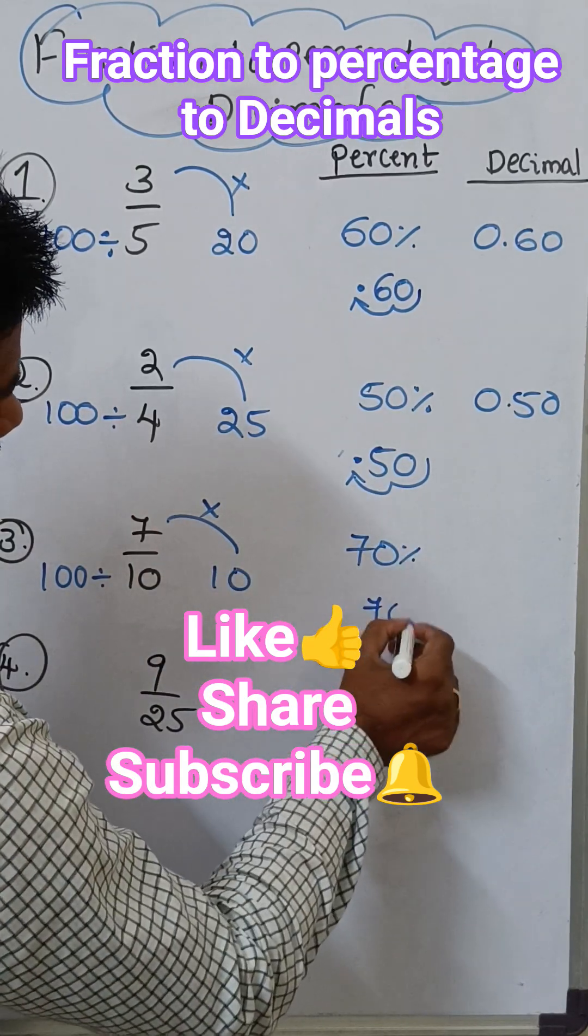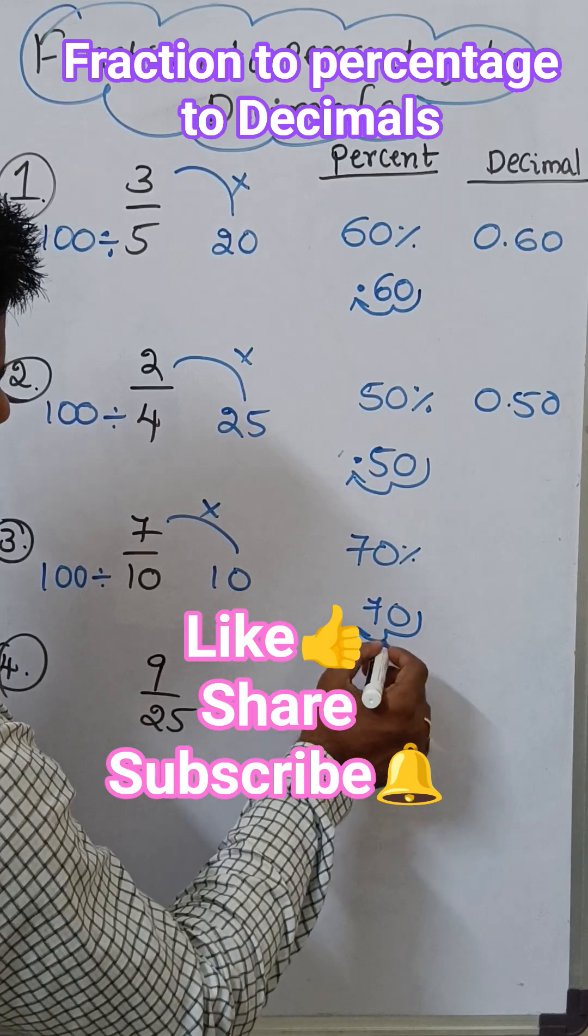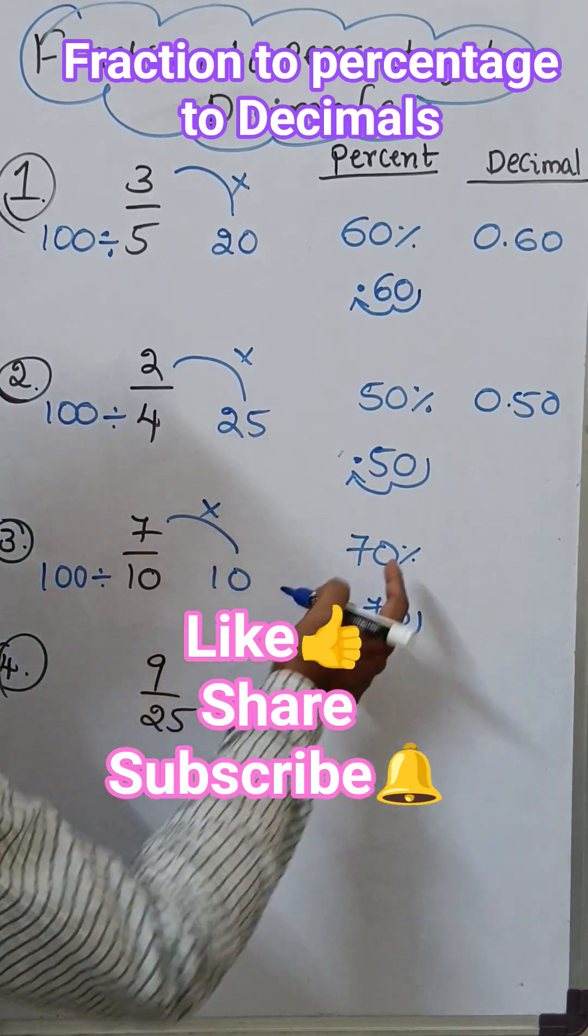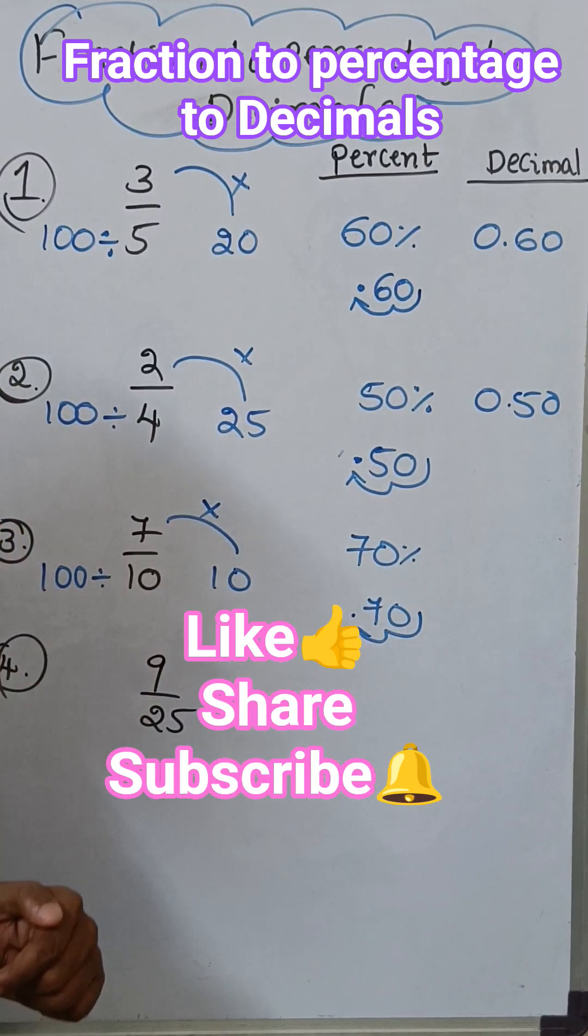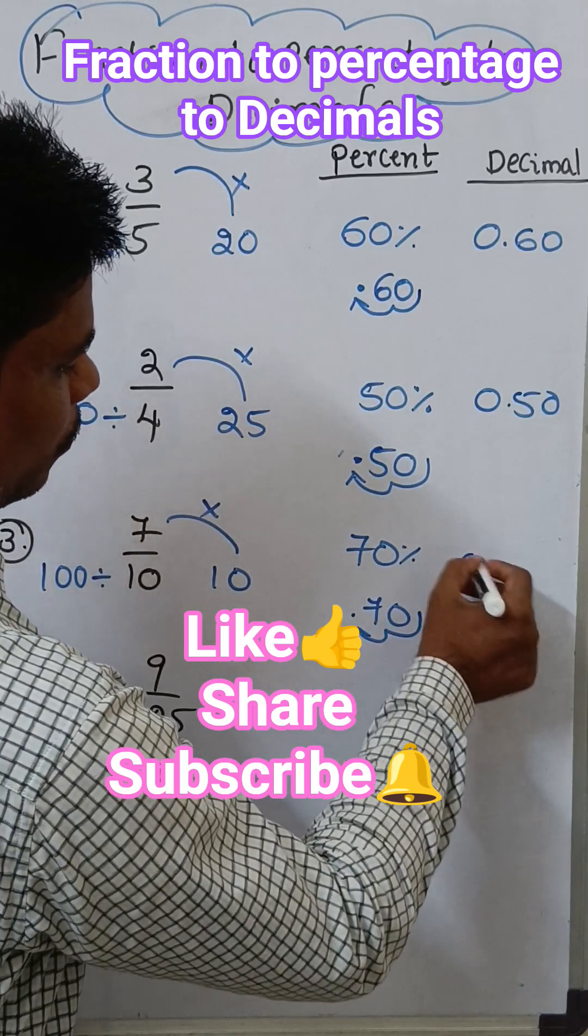So how to convert the decimal? You have to move the right to left 2 decimals. Percent means by 100, so move the 2 decimals, that is 0.7.